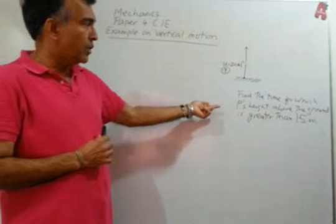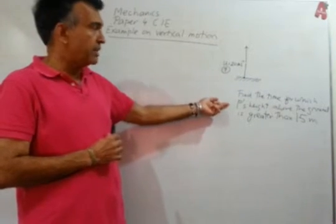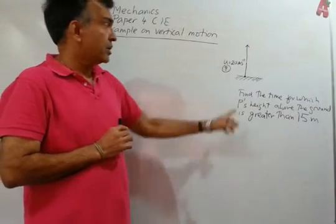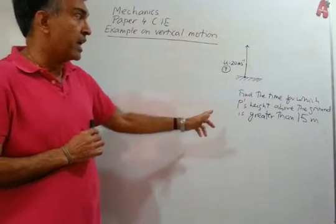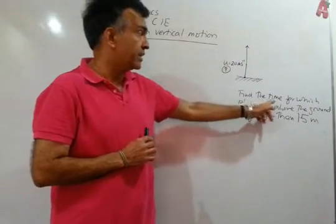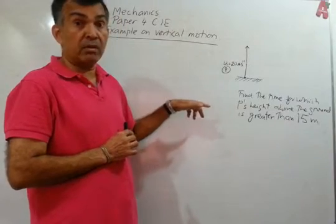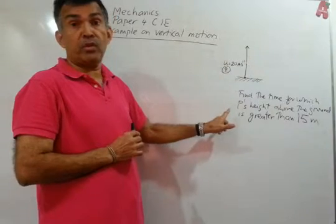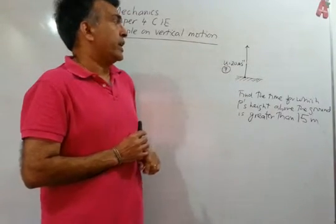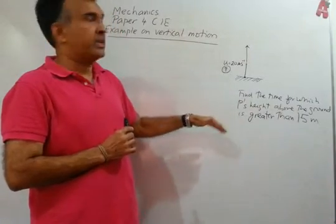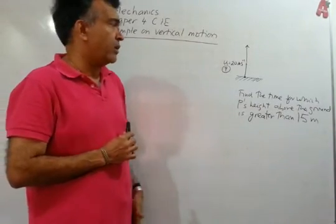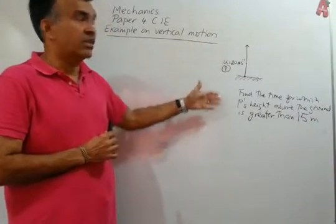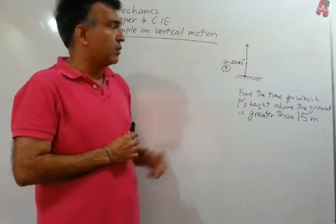The question is asking us to find the time for which P's height above the ground is greater than 15 meters. Be careful when you answer this question. There's a second part which you can look up in the textbook or at the madcenter.com mechanics section, but here let's focus on this part.